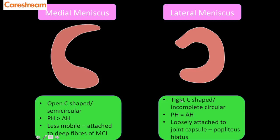The lateral meniscus has a tight C-shaped appearance — more of an incomplete circular shape. An important point is that the anterior horn and posterior horn of the lateral meniscus are similar in size. So if you find the posterior horn is smaller than the anterior horn, there is a tear. The lateral meniscus is loosely attached to the joint capsule because between the meniscus and the capsule there is a popliteal hiatus, through which the popliteus tendon passes. The popliteus tendon is an intra-articular structure that then passes through the capsule and exits.